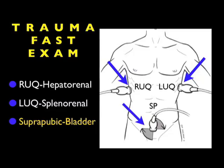In conclusion, the SoundBytes module covering the suprapubic view of the trauma FAST exam is a very important one to add to the exam of your trauma patient, as we can potentially detect a smaller amount of fluid here within the pelvis than it takes to make a positive right upper quadrant or left upper quadrant view. Remember that this is a two-step exam — we look in both short and long axis configurations to verify fluid. Also remember the differences between the female, where we're looking into the pelvic cul-de-sac for fluid, and the male, where we're looking into the retrovesical space for fluid.